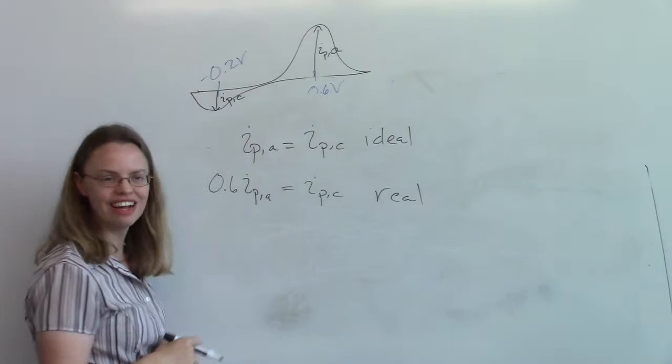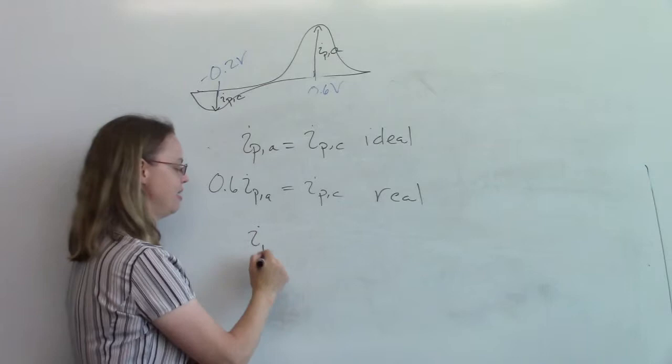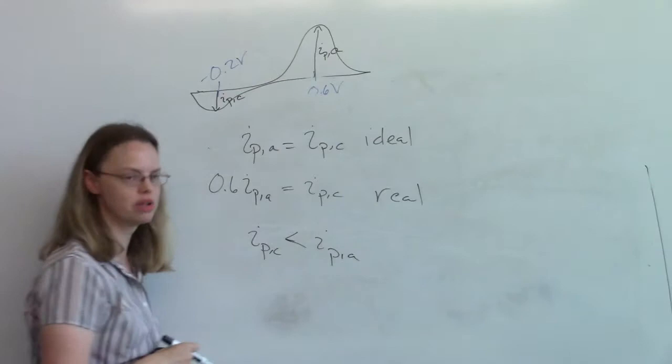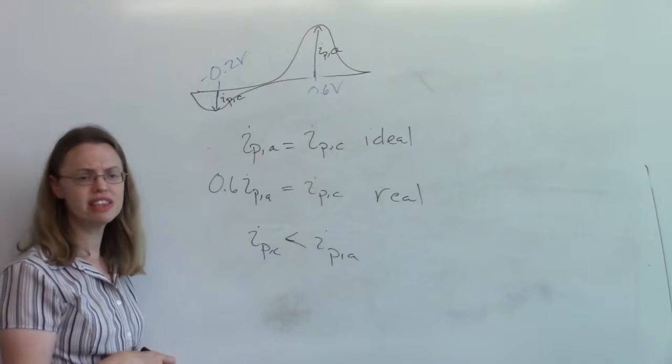So this one, if this is two, this might be one. They're not equal. IPC is substantially less than IPA. It's noticeable. Quite noticeable. In fact, it's worse if you go in vivo.